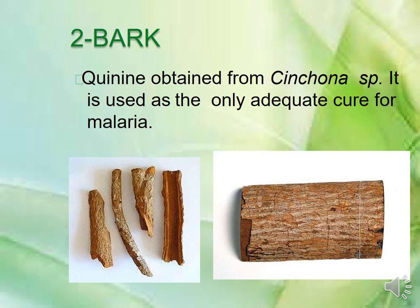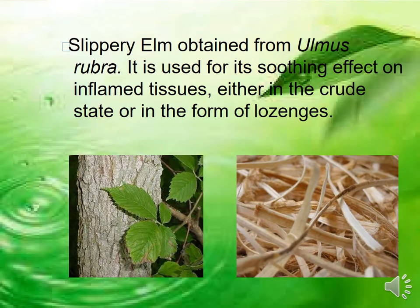The second class is bark-based drugs. Quinine is a bark-based drug obtained from Cinchona species, and it is used as the only adequate cure for malaria. Slippery elm is obtained from Ulmus rubra. It is used for its soothing effect on inflamed tissues, either in the crude state or in the form of lozenges.